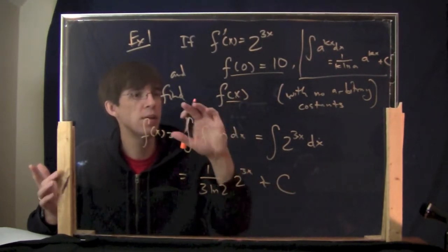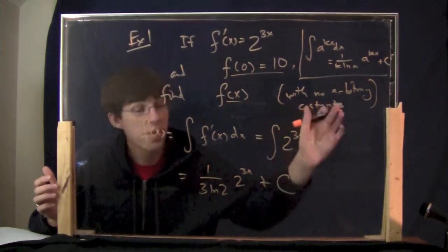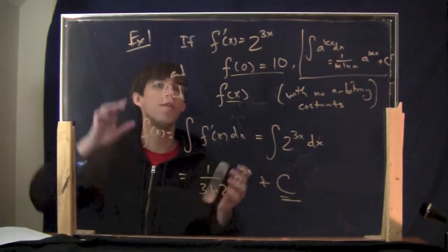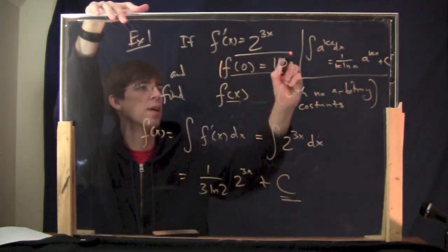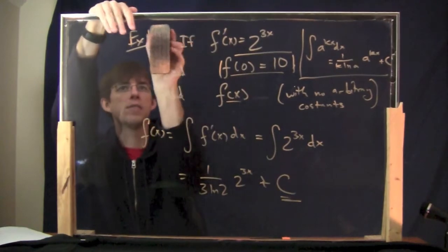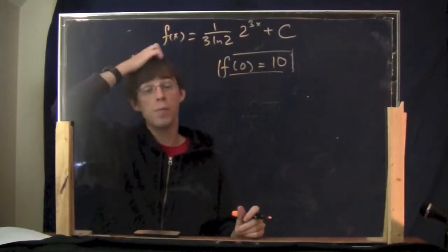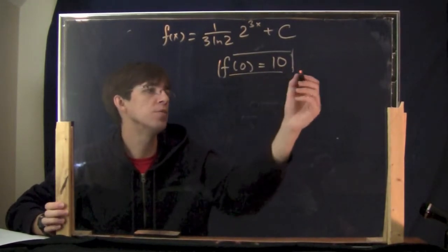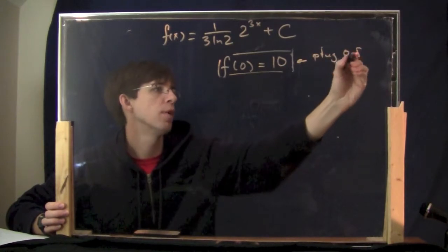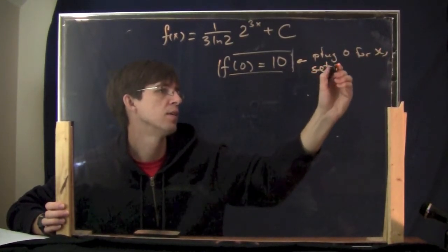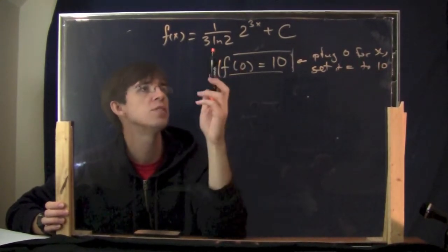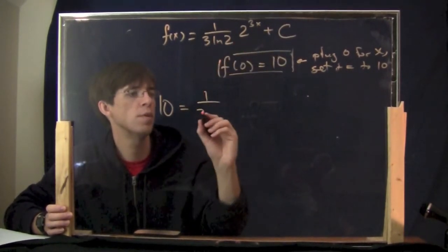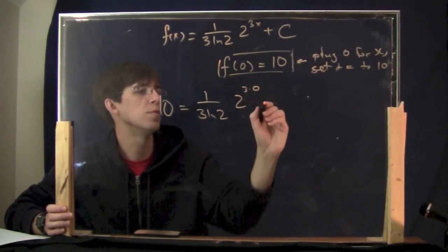You're pretty much done at this point, although not quite. The question was find f of x with no arbitrary constants, and I have the plus c. We've got to figure out what c is. We can actually solve for c by using that initial condition. So we have f of x equals that expression, and f of 0 equals 10. You plug 0 for x and set it equal to 10. So: 10 equals 1 over 3 ln 2 times 2 to the 3 times 0, plus c.